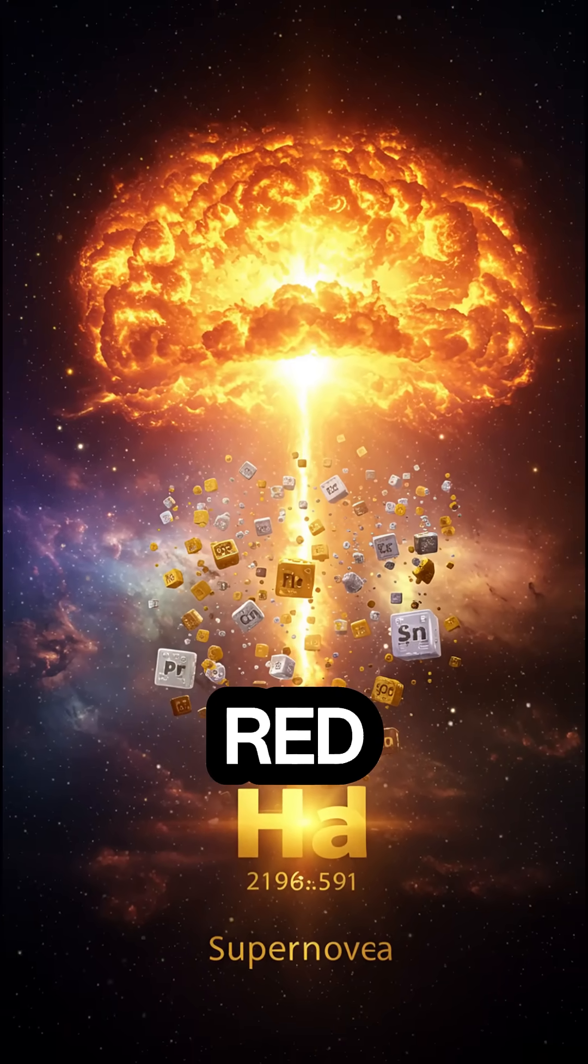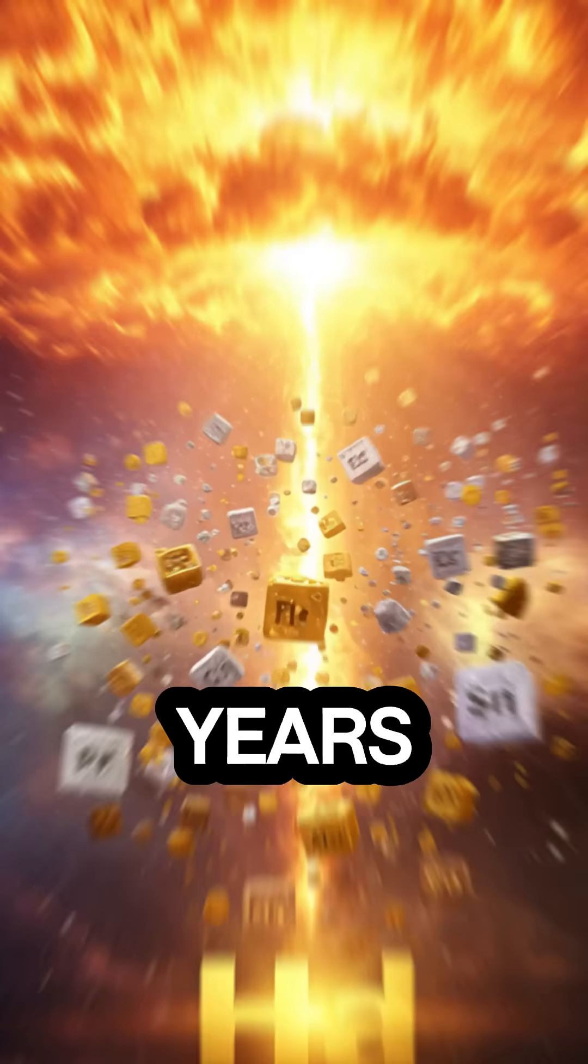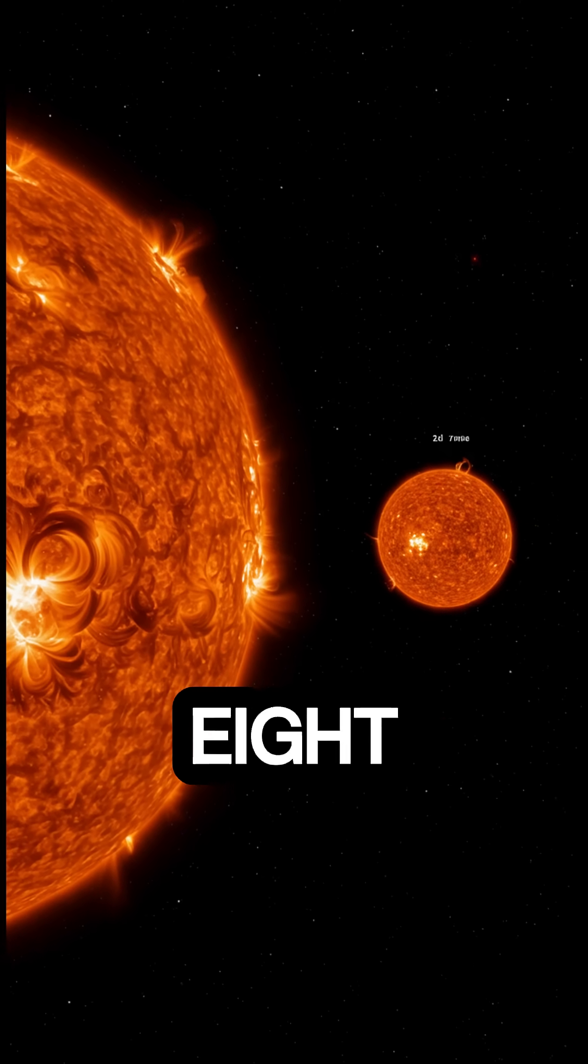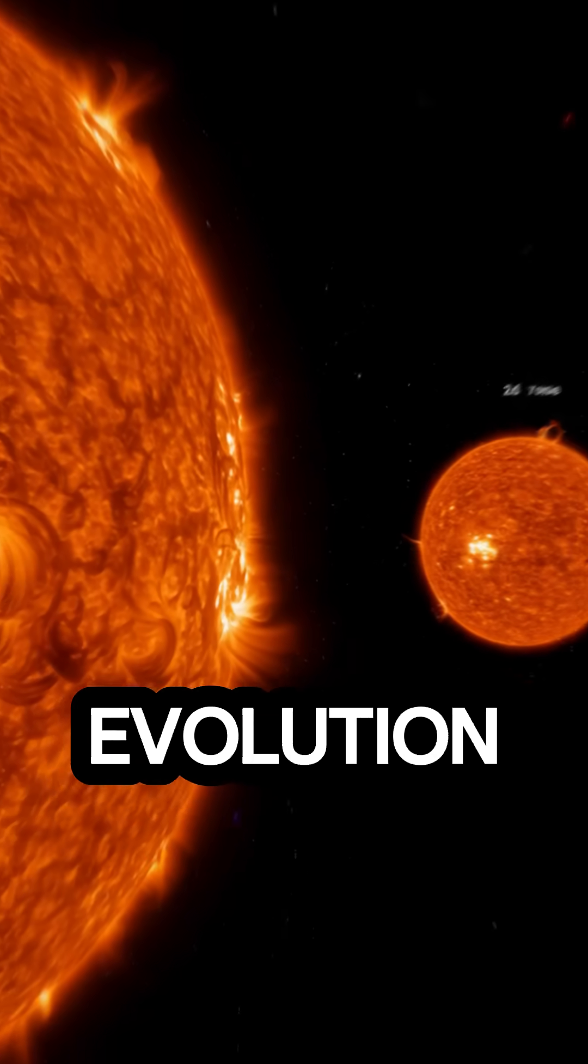Our sun is expected to evolve into a red giant and then into a white dwarf over a period of about 8 billion years. However, stars with more than 8 times the mass of our sun go through an entirely different process of evolution.